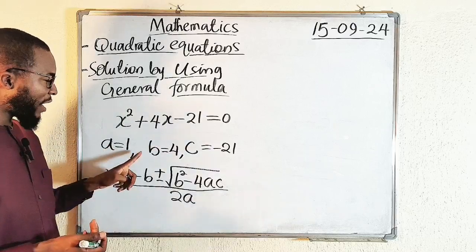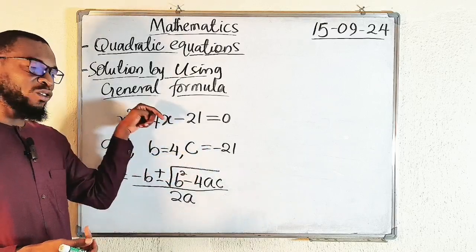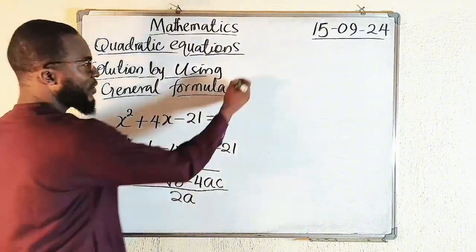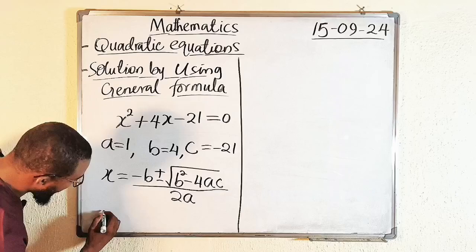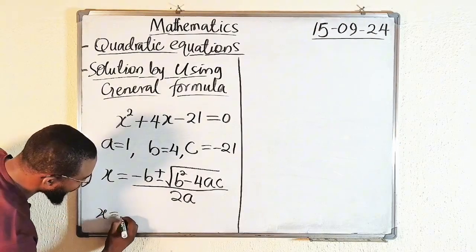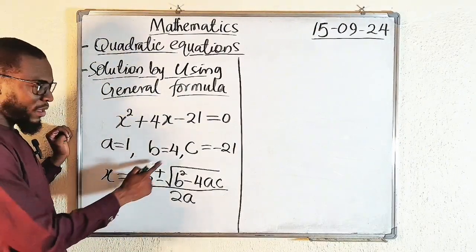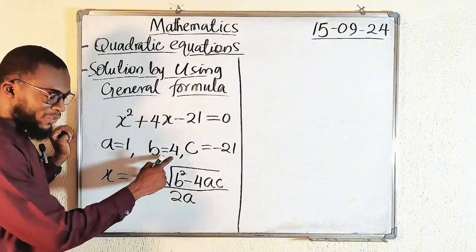So having our data A, B, C, all we have to do is to plug them into this general formula. x equal to B is 4, but we need minus B. That is minus 4.